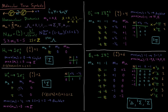Whenever we have pi orbitals, that's where we have the difference. The values of m sub lambda that we need in our tables, instead of ranging from plus l to minus l, it's only plus or minus l — skipping the values in the middle.